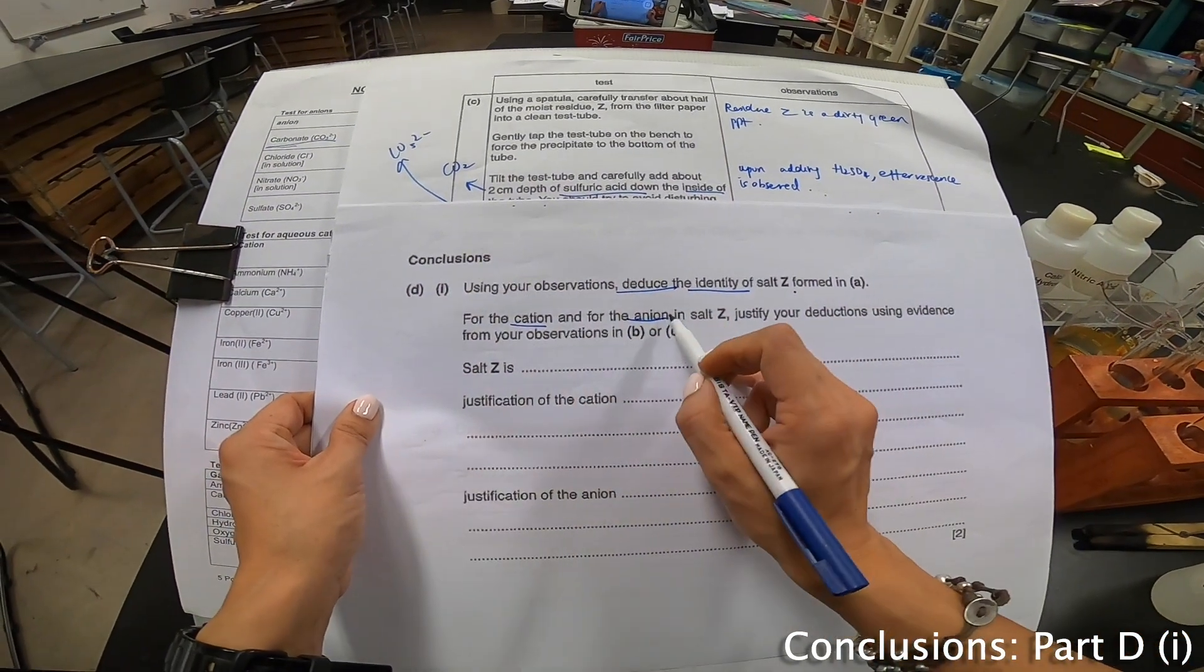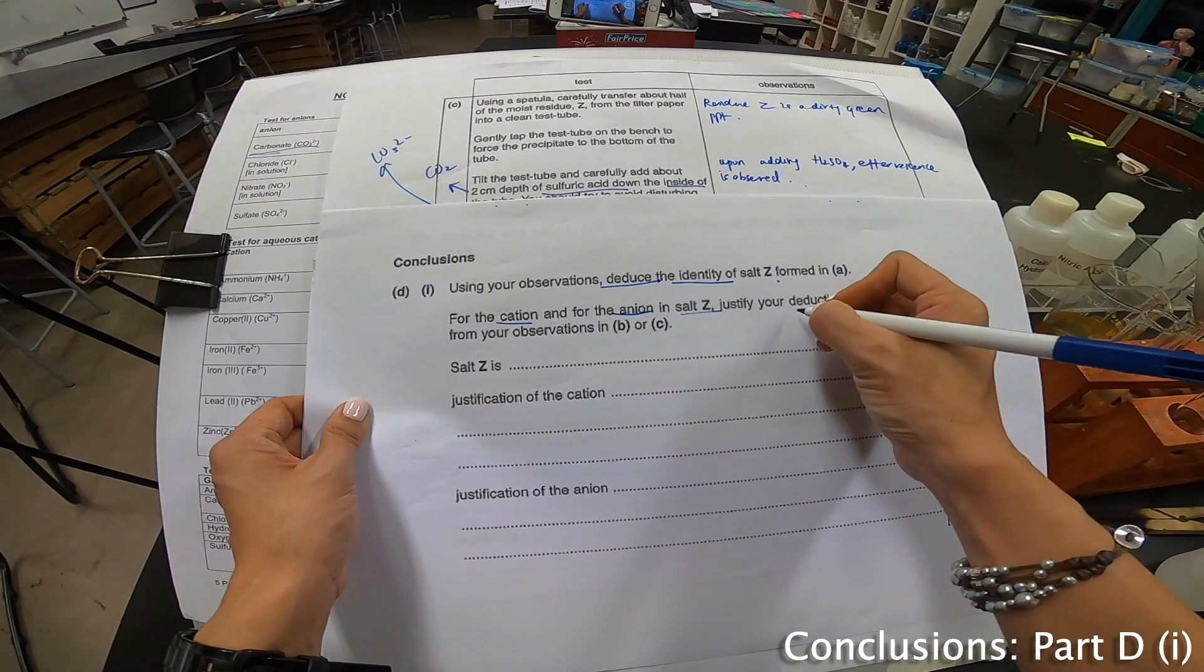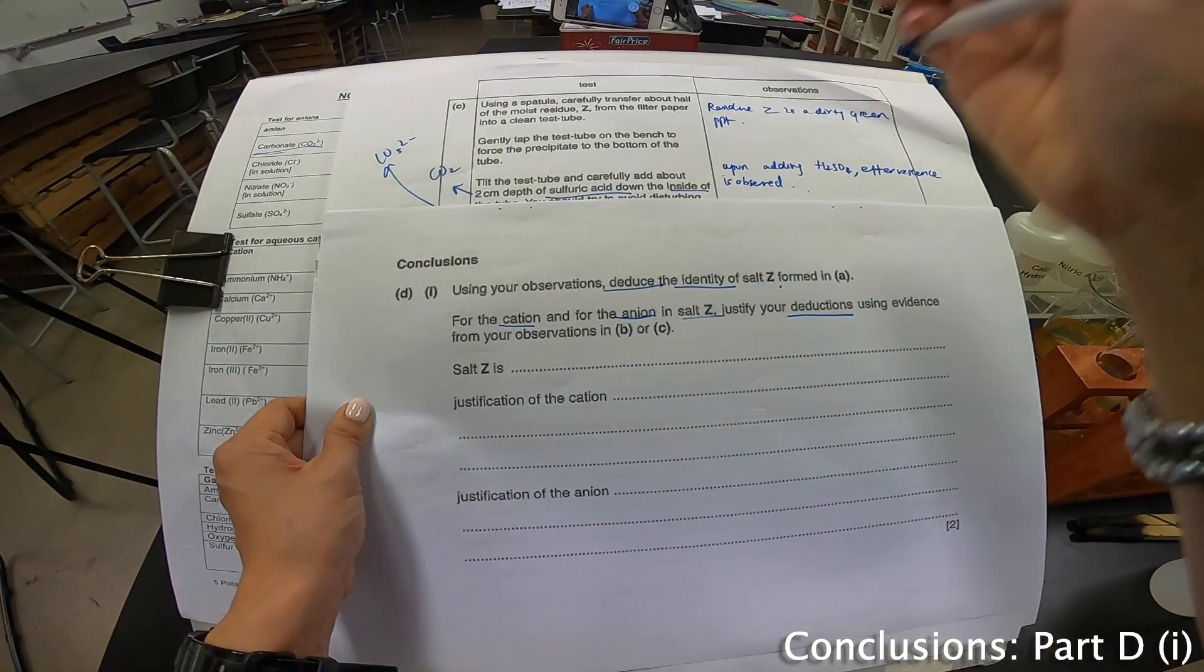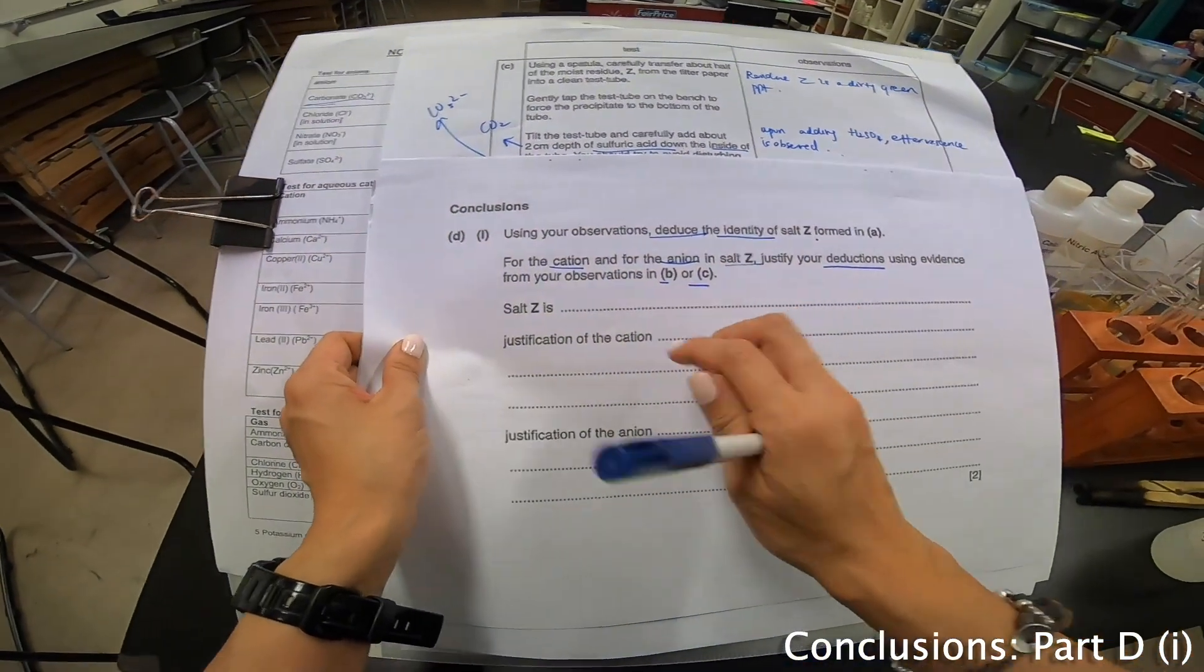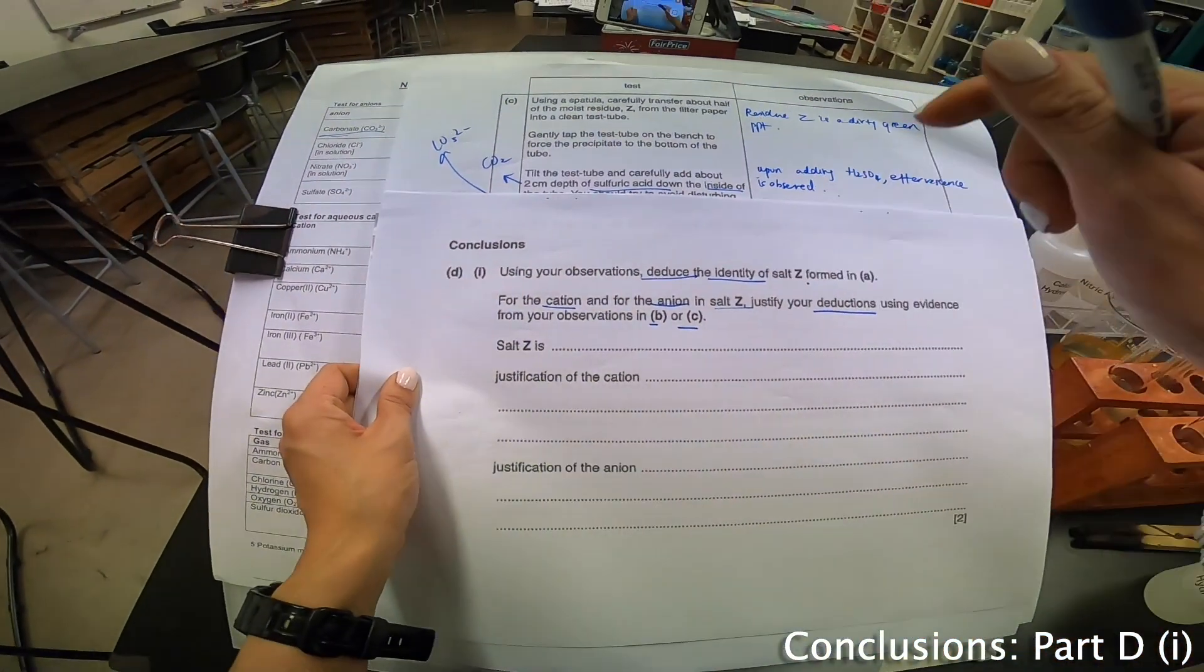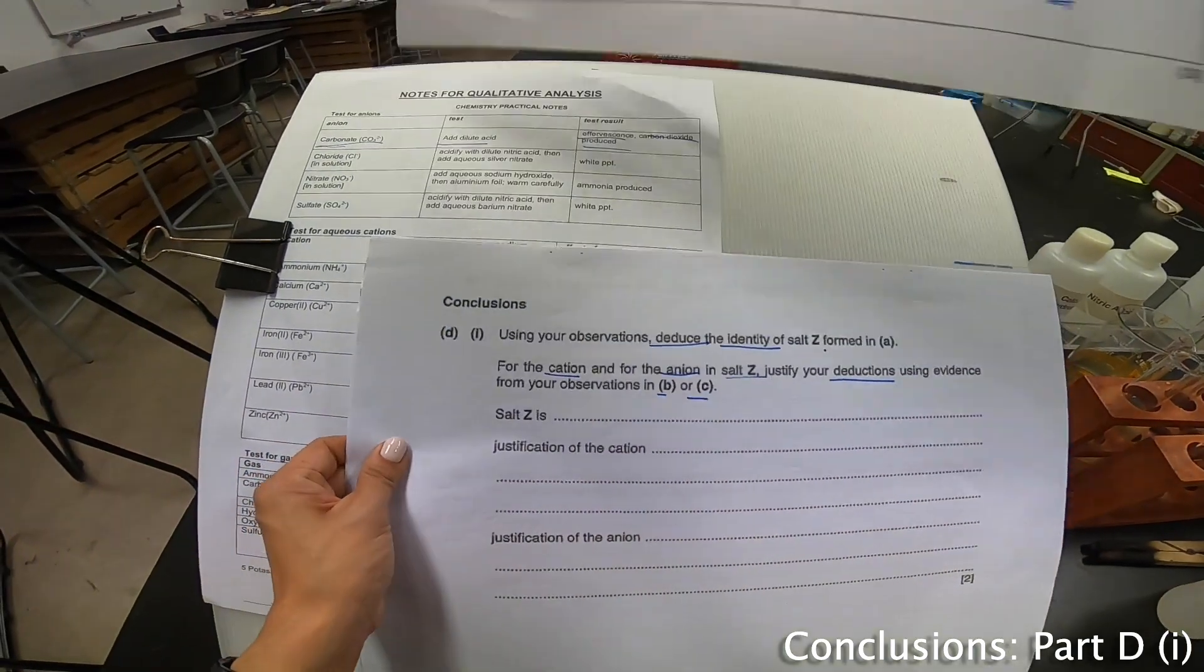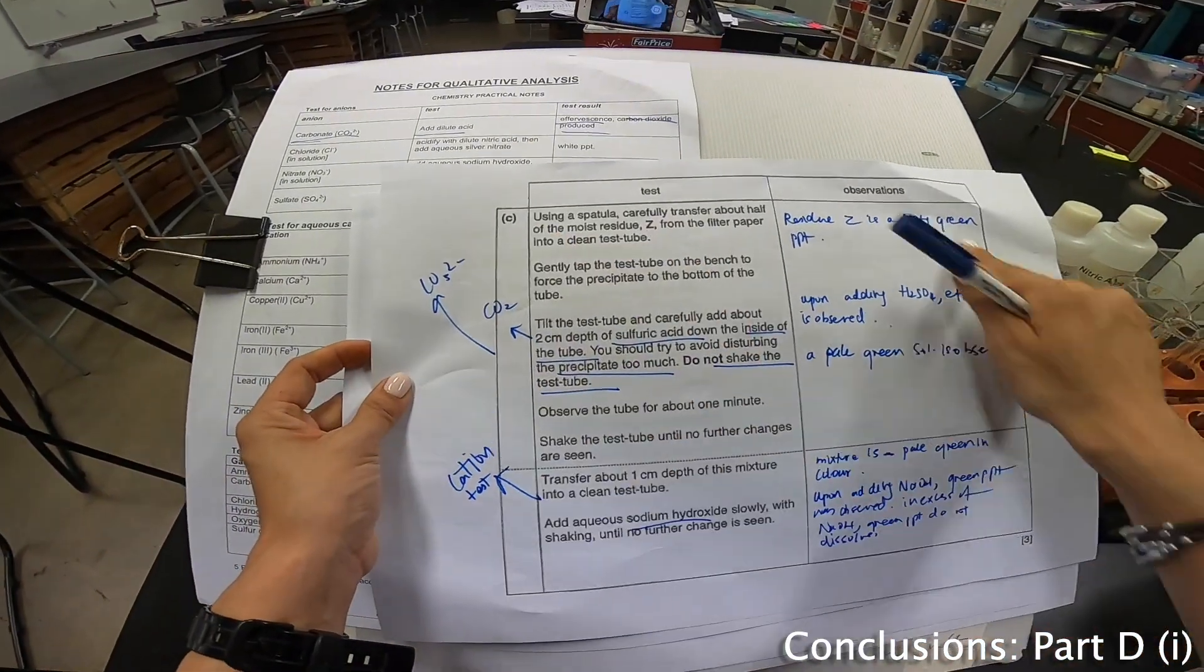So for the cation and for the anion in Z, justify your deduction using evidence from B or C. Salt Z is, well, I can immediately say the anion first. Why? Because I have the anion here because carbon dioxide is produced.